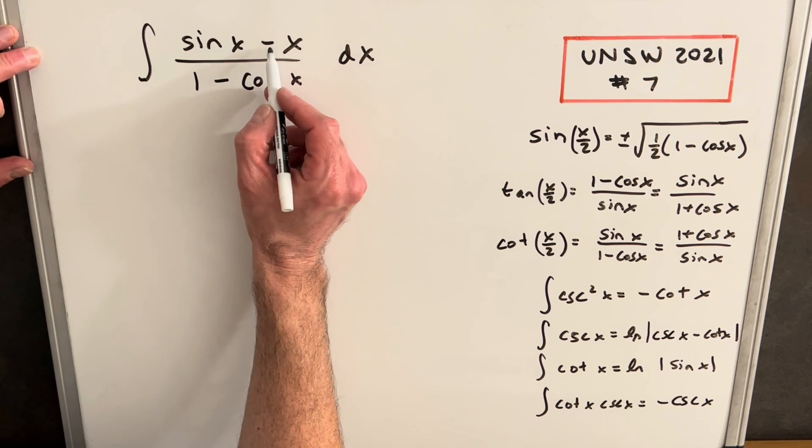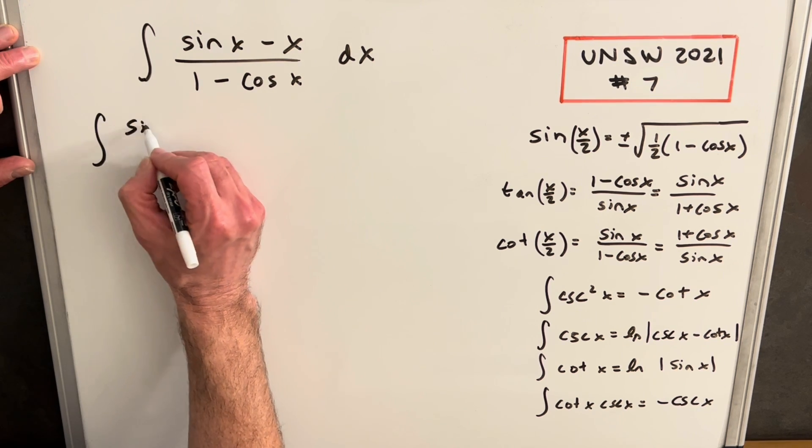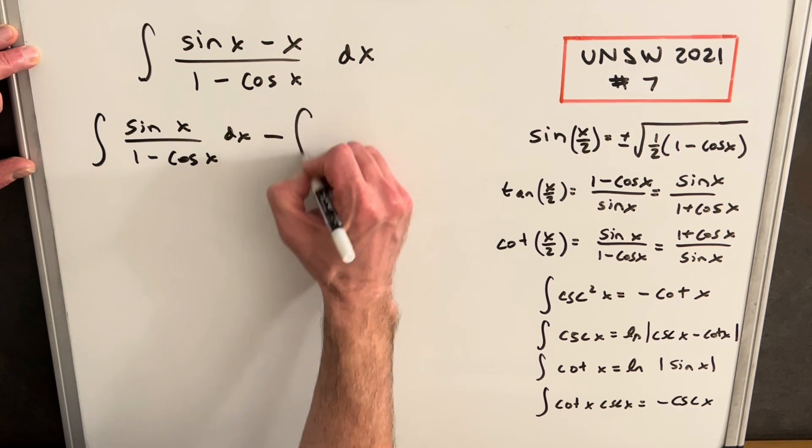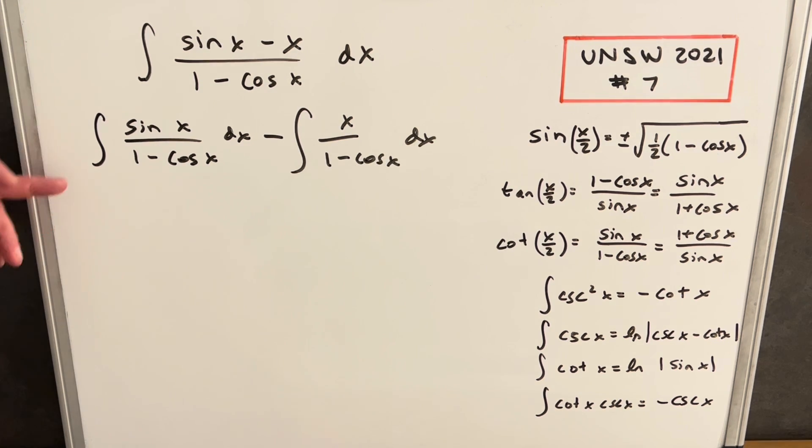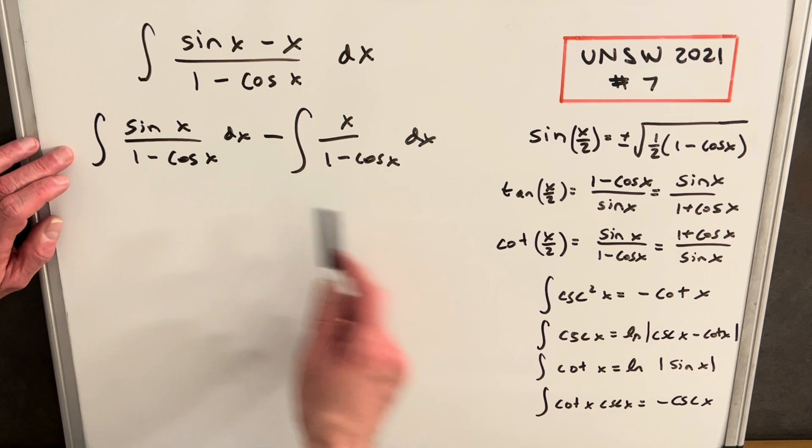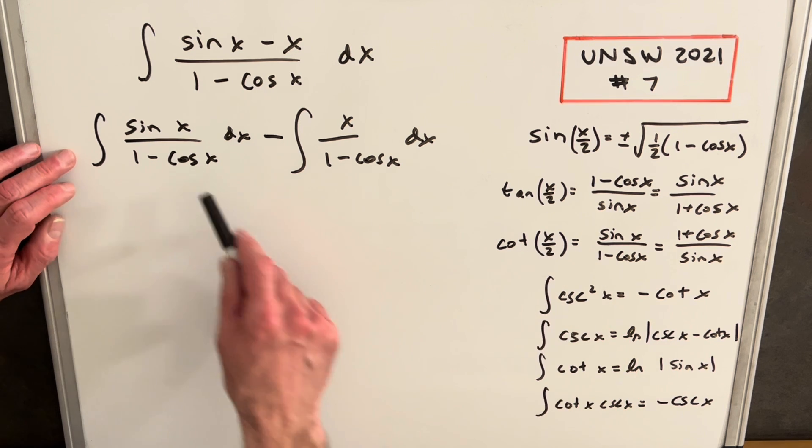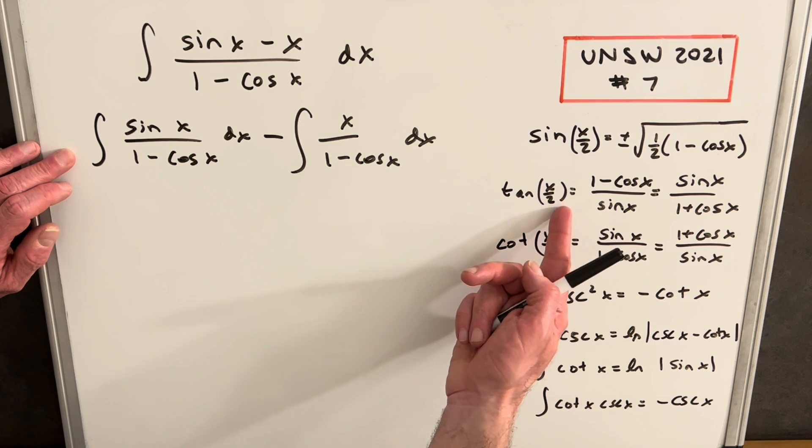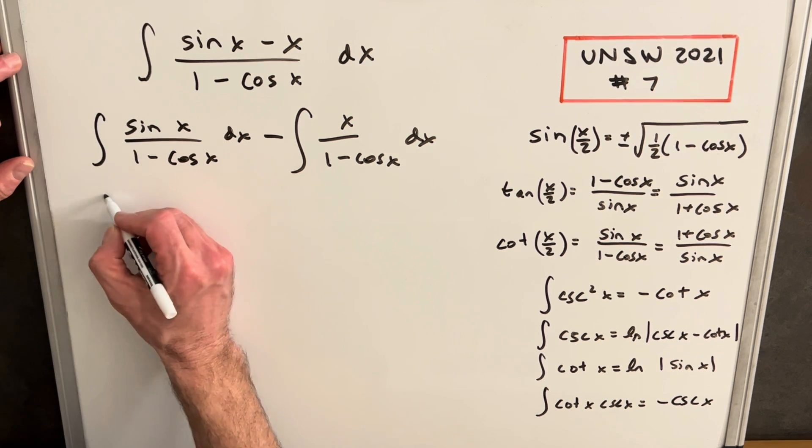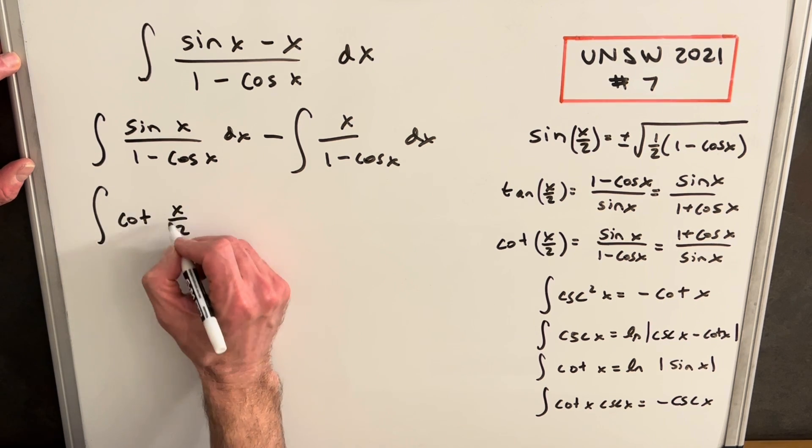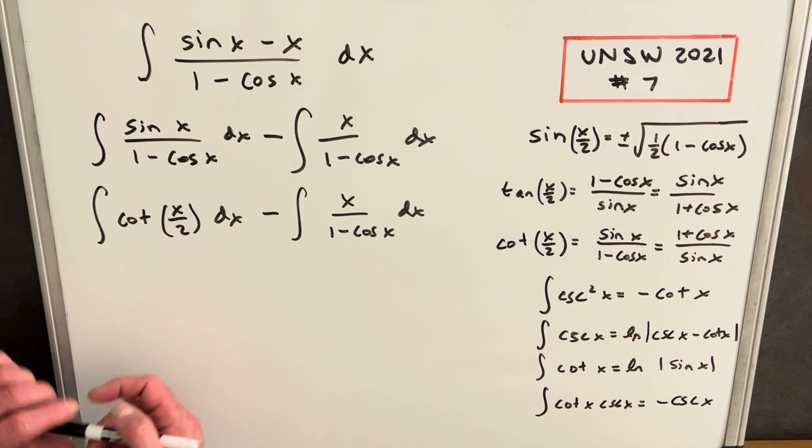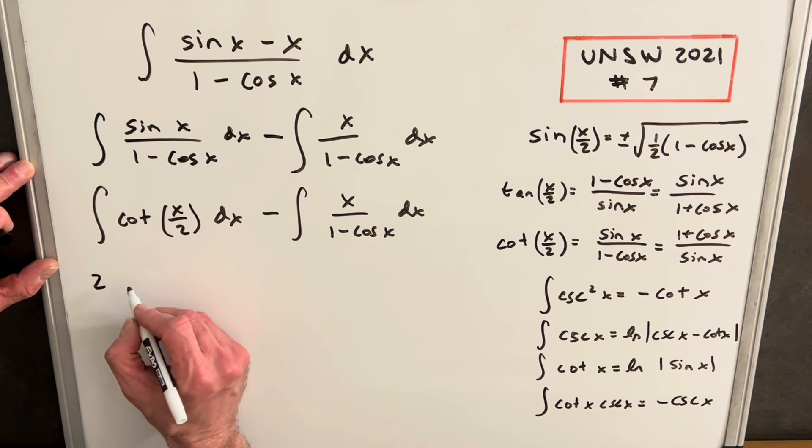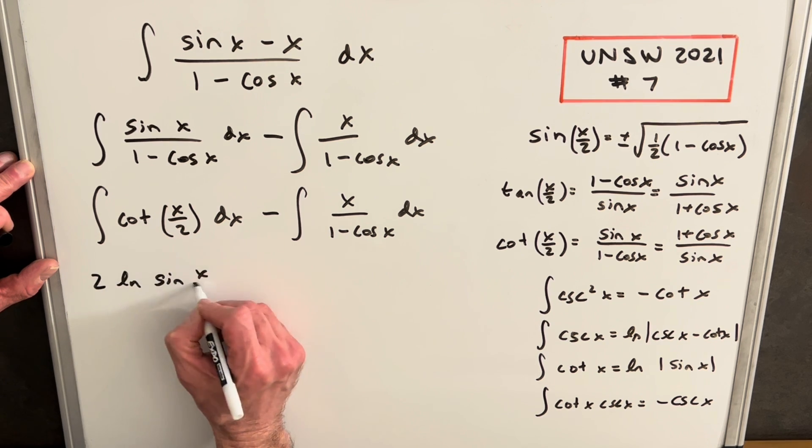For my first step, since we have a subtraction up here, I'm going to break this up into two integrals. We'll have a separate integral for x over 1 minus cos x. This sine x over 1 minus cos x is actually cotangent of the half angle formula, cotangent x over 2. So we'll rewrite this piece as cotangent x over 2 dx. We can integrate this using this formula. We'll pull a 2 up front, and we'll have 2 natural log sine x over 2.